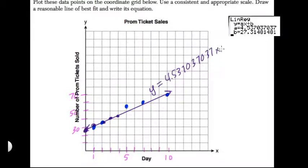Write your equation: y equals 4.537037037 repeating times x plus 27.31481481 repeating. This is your line of best fit. We have it all set up. You can approximate the line of best fit and estimate the slope, but since they give you the graphing calculator, you might as well be precise. Hope this helped.